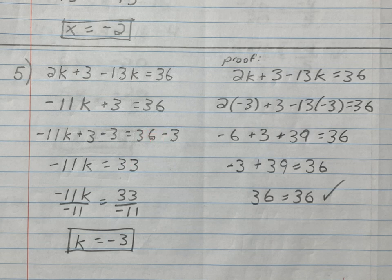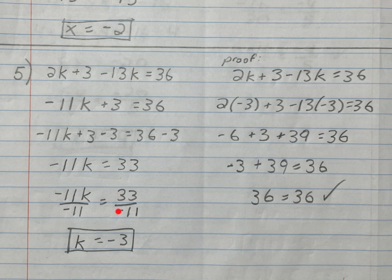36 minus 3 is 33, so -11k = 33. k is being multiplied by -11, so we undo it by dividing by -11 on both sides. Negative 11 over negative 11 equals 1, so 1k is just k. 33 divided by -11 — positive divided by negative is negative, and 11 goes into 33 three times — so k = -3.